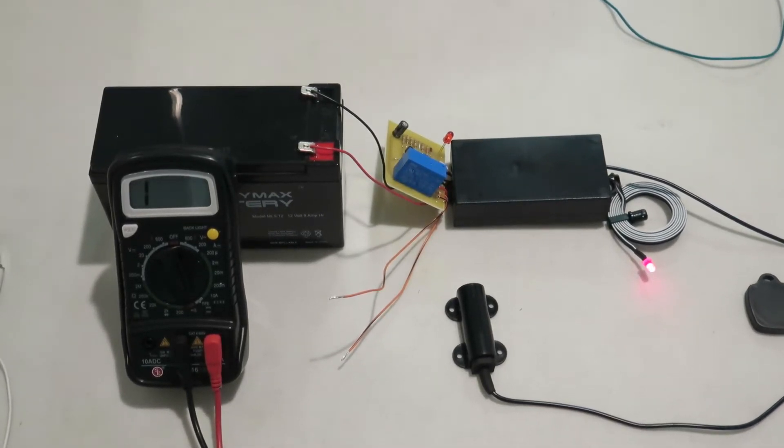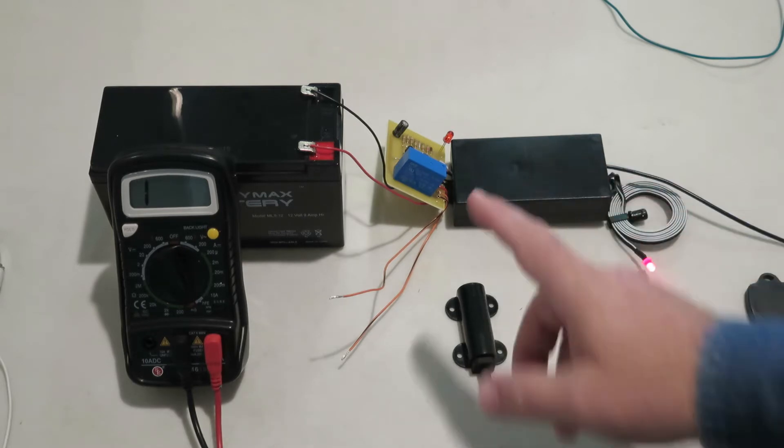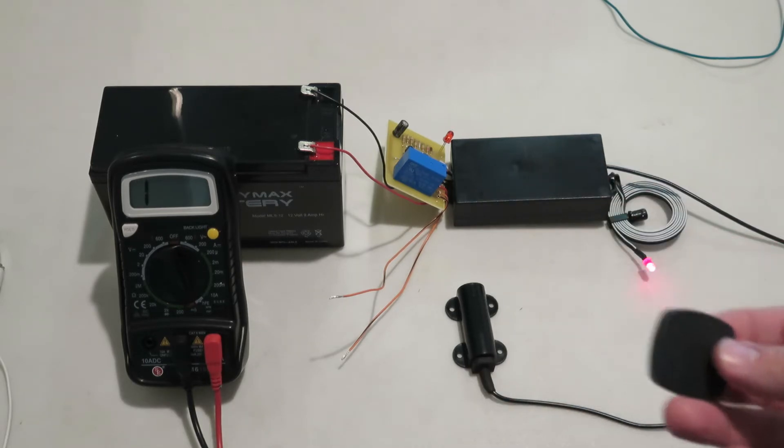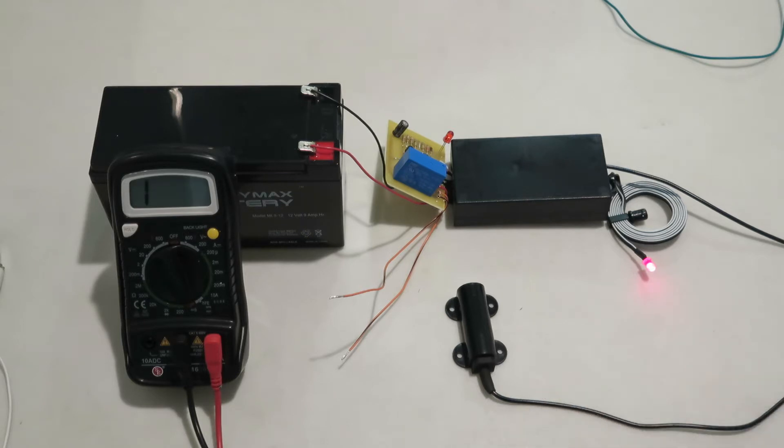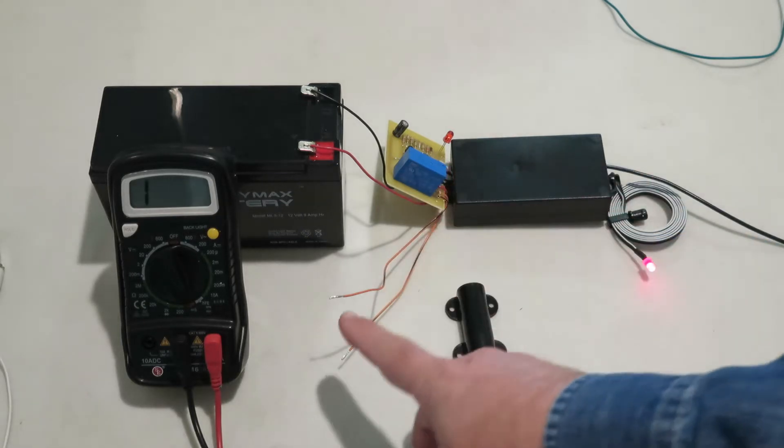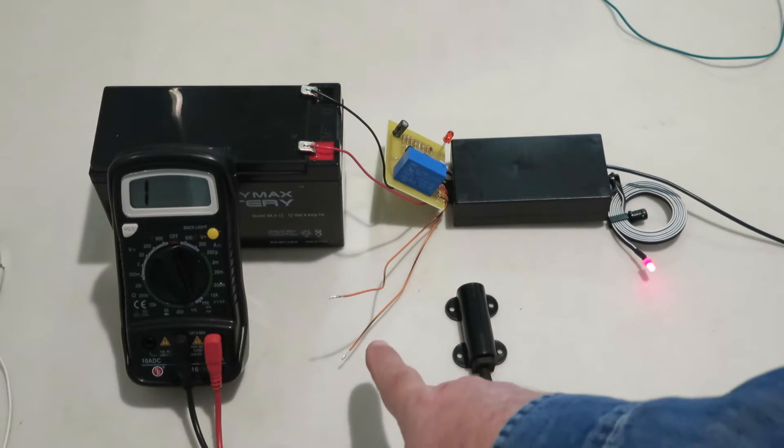Hello everybody, I wanted to do a demonstration on the fob proximity sensor and how it works. Once the fob is brought near the sensor, it collapses the relay and completes a circuit on the two orange wires.